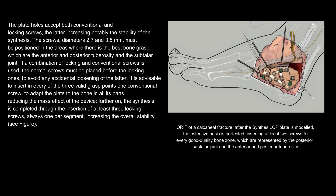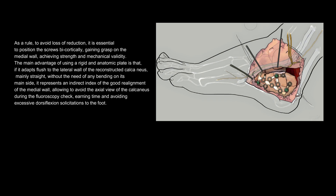ORIF of a calcaneal fracture: after the Synthes LCP plate is modelled, the osteosynthesis is perfected by inserting at least two screws for every good-quality bone zone — the posterior subtalar joint and the anterior and posterior tuberosity. To avoid loss of reduction, it is essential to position the screws bicortically, gaining grasp on the medial wall for strength and mechanical validity. The main advantage of a rigid anatomic plate is that, if it adapts flush to the lateral wall of the reconstructed calcaneus without bending, it represents an indirect index of good realignment of the medial wall, allowing avoidance of the axial fluoroscopy view and avoiding excessive dorsiflexion solicitations to the foot.